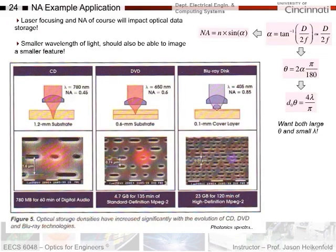Another application where numerical aperture is important is CD versus DVD versus Blu-ray discs. You can get to higher storage densities on the surface as you do two things: decrease the wavelength of light — going from CD to Blu-ray — which allows you to image smaller features, and also decrease the numerical aperture of the lenses, which allows you to get closer to the surface and see smaller and smaller features, going from less than a gigabyte to 23 gigabytes for Blu-ray.